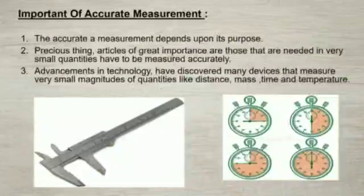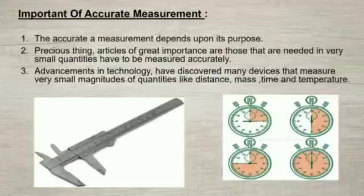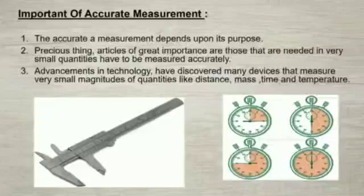Now let's know the importance of accurate measurement. Accurate measurement represents how close a measurement comes to its true value. This is important because bad equipment, poor data processing or human error can lead to inaccurate results. How accurate the measurement must be depends upon its purpose. Accordingly, an appropriate device has to be used for the measurement. A measurement of substances that are precious, of great importance and used in very small quantities is done accurately. Due to advancement in technology, devices that measure very small magnitudes of quantities like distance, mass, time and temperature are now available. For example, distance and time in connection with very important sports competitions, mass of gold, body temperature, etc.